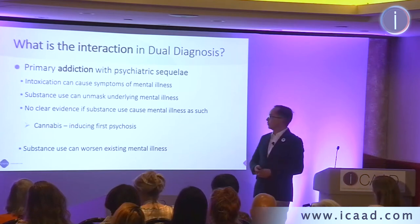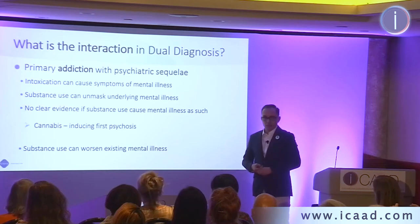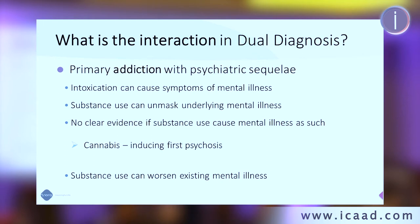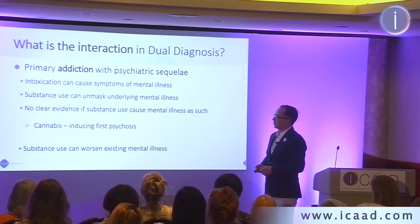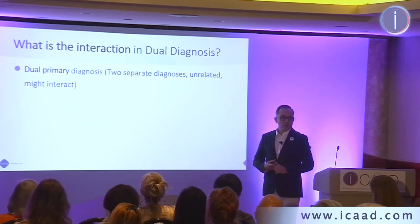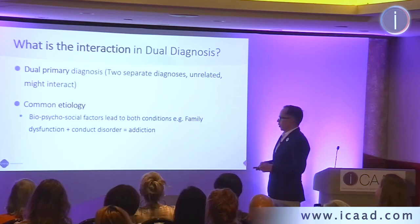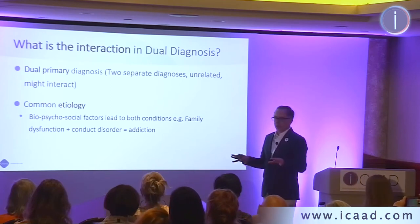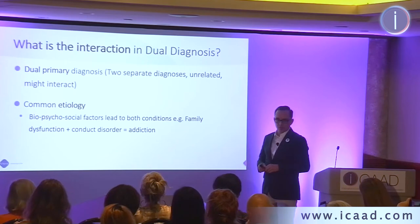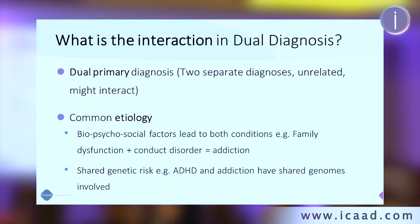The other way around: primary addiction with a psychiatric sequel. There's no real foundation in literature that a substance can cause a mental illness directly, but there is evidence that it can unveil an underlying mental disorder — if you're prone to depression, alcohol might trigger it; if prone to psychosis, cannabis can trigger that. That is proven. A third option is that two things coexist in one patient with nothing to do with each other. Or a common etiology — conduct disorder and addiction both having family dysfunction as a cause, or shared genetic risk like ADHD and addiction sharing genetics.